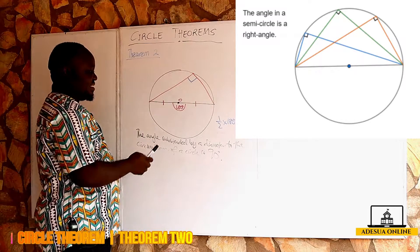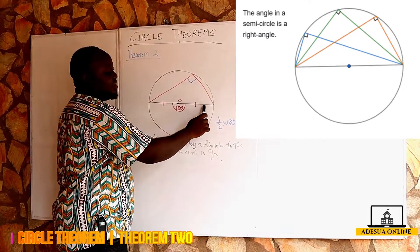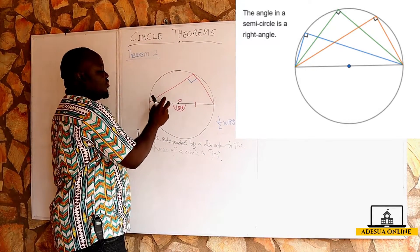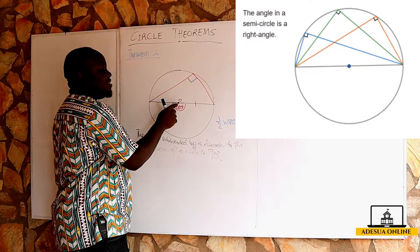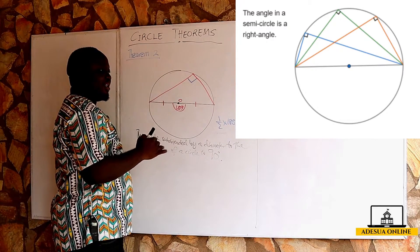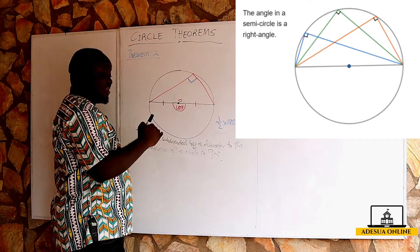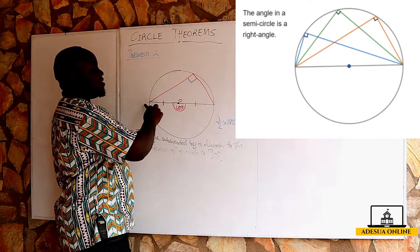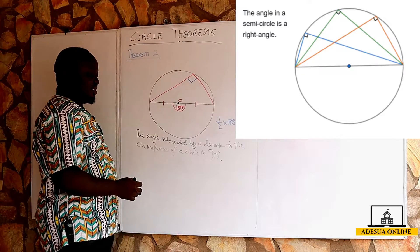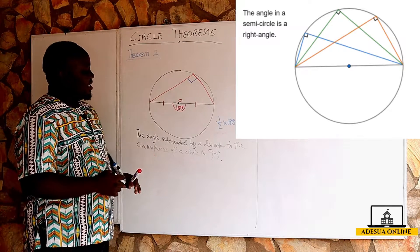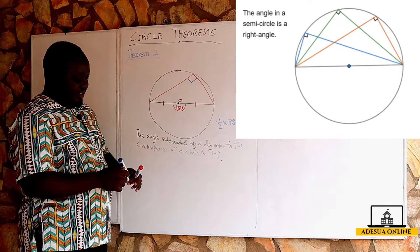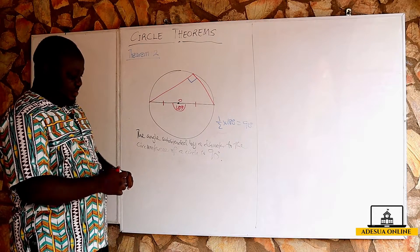To explain: we have a radius and another radius forming a diameter, sending an angle to the center of 180 degrees, because half of a circle is 180 degrees. It sustains an angle to the circumference that is half of 180, which is 90 degrees. So the angle suspended by a diameter to the circumference of a circle is 90 degrees.